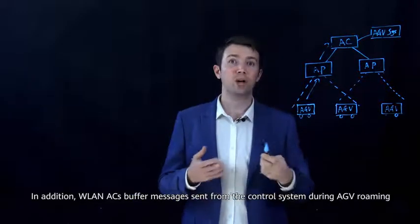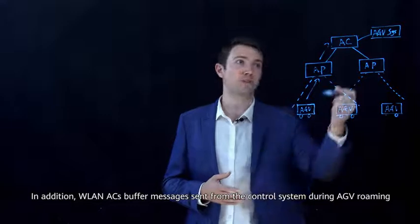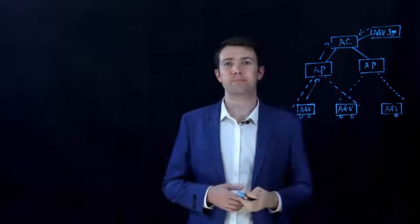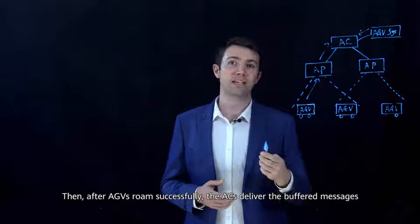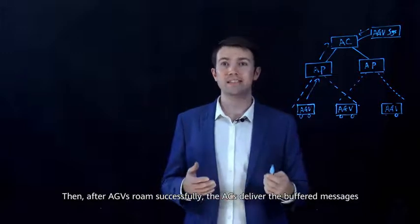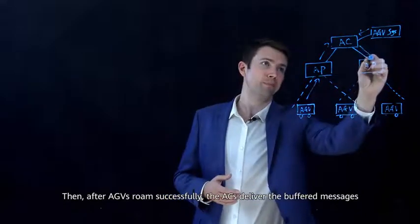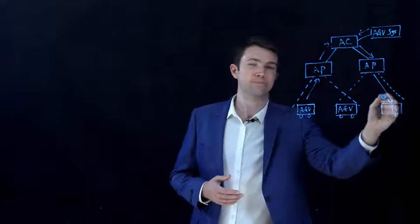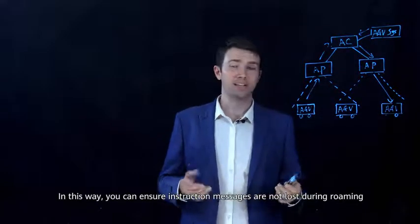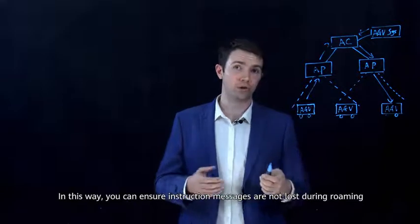In addition, WLAN ACs buffer messages sent from the control system during AGV roaming. Then, after AGVs roam successfully, the ACs deliver the buffered messages. In this way, you can ensure the instruction messages are not lost during roaming.